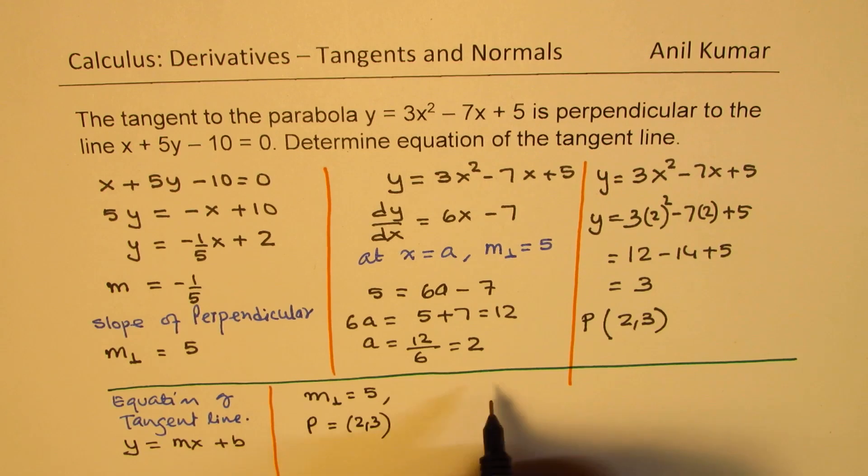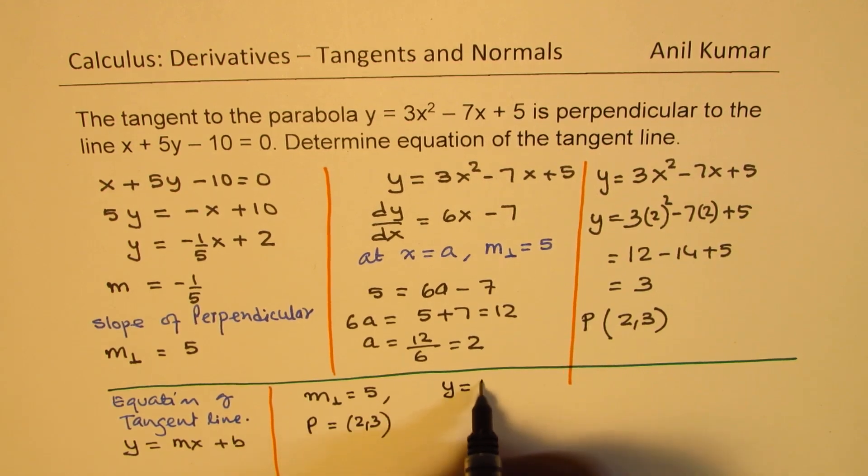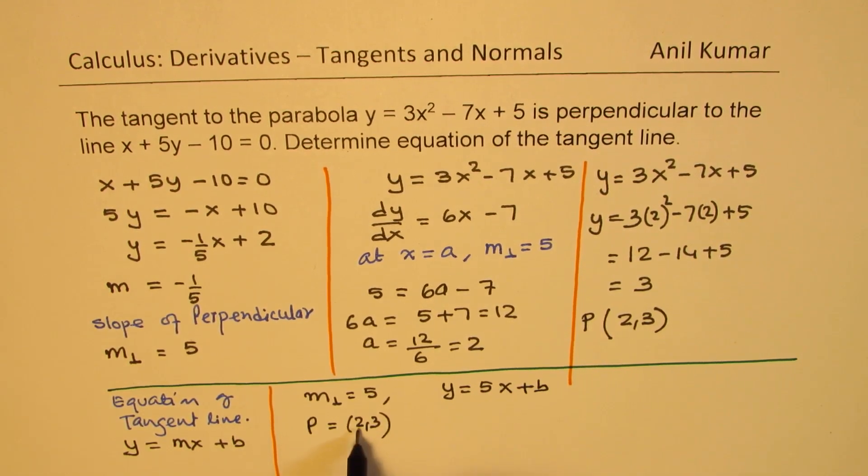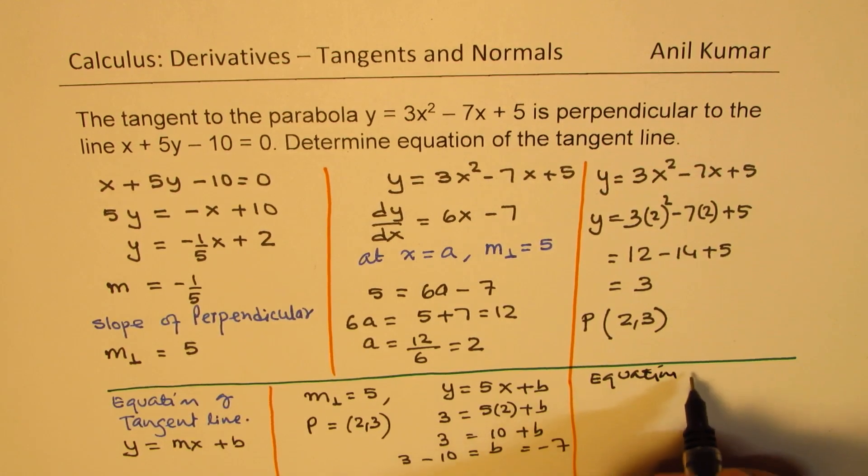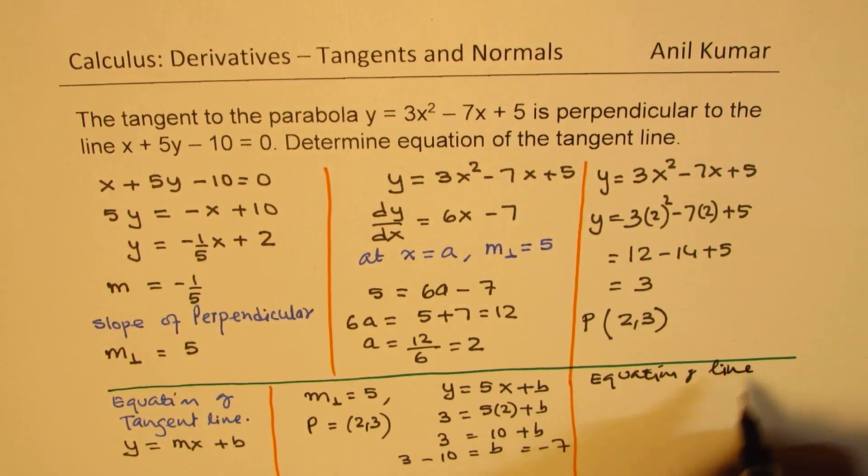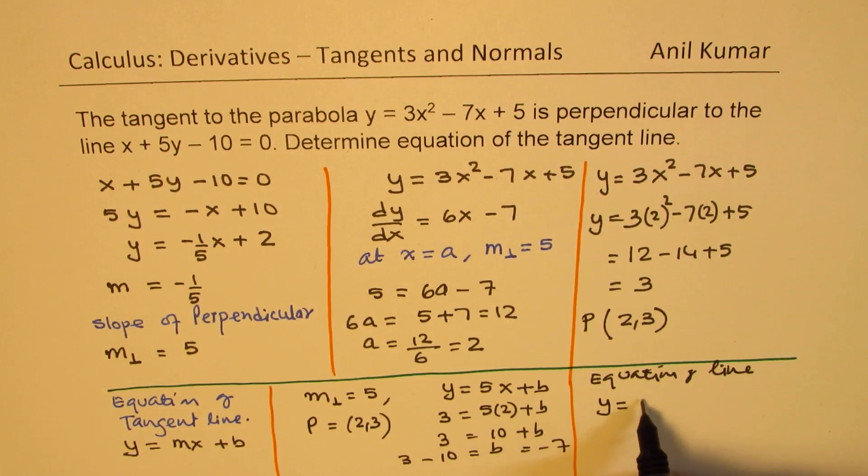And therefore, substituting here, which is y equals 5x plus b, substituting the point 2 and 3, we get 3 equals 5 times 2 plus b. So, it is 3 equals 10 plus b, or we get 3 minus 10 equals b. So, that gives you the value of b as minus 7. So, we get our equation of the line. So, the equation of the line is y equals 5x minus 7.